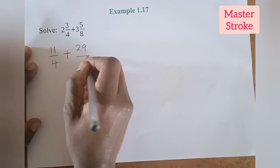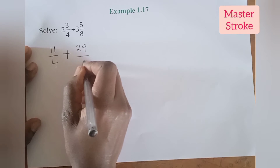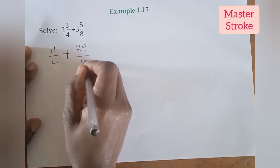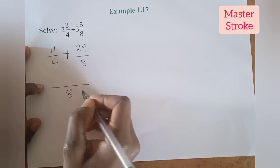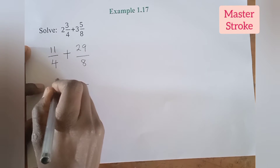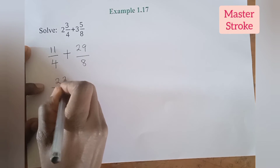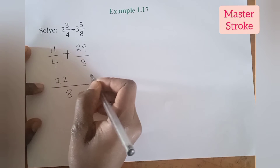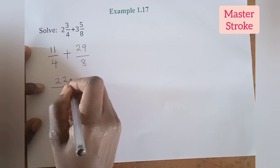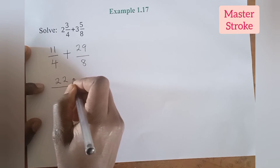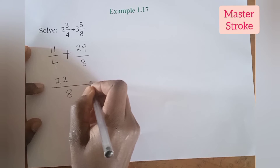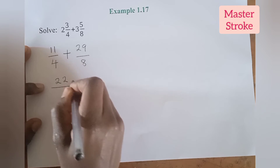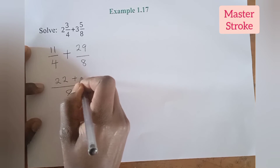3 and 5 eighths becomes 29 over 8. Then we put them under a common denominator, which is 8. So 11 over 4 is the same as 22 over 8, plus 29 over 8.